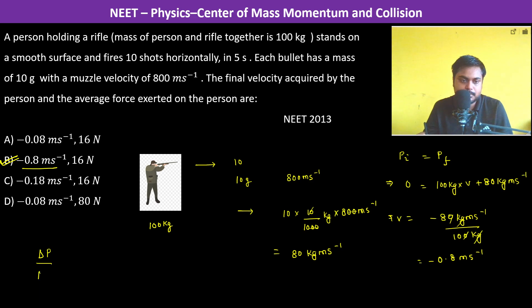Now what is the change in momentum? 100 kg into 0.8 meter per second divided by 5 seconds. So this is 80 divided by 5, which is 16 newtons. So 16 newtons, thank you.